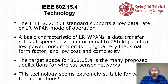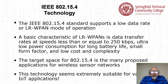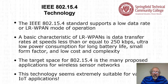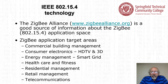The 802.15.4 standard supports a low data rate WPAN mode of operation. Basic characteristics include data transfer rates at speeds less than or equal to 250 kilobits per second, ultra-low power consumption for long battery life, small form factor, and low cost and complexity. The target space for 802.15.4 is the many proposed applications for wireless sensor networks, which came before the Internet of Things. This technology seems extremely suitable for various IoT applications. The Zigbee Alliance is a good source of information about the Zigbee application space.